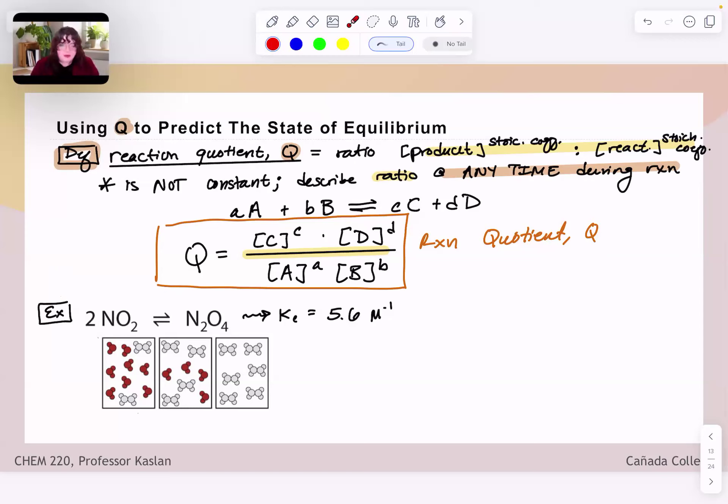So I've got an example down here where we're looking at the dimerization to form N2O4 from NO2 gas. And I'm showing three different states. So kind of three different snapshots of what's going on in this reaction. Let's call this state one where we're at time one during the reaction. Let's call this one highlighted in blue the time at which we achieve equilibrium. And then let's call this third state here some other time T2 during the reaction.